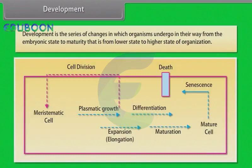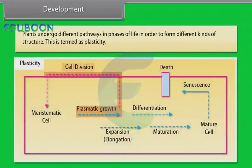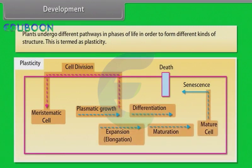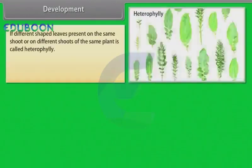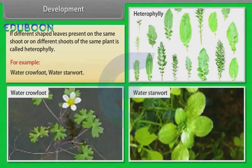Development is the series of changes in which organisms undergo in their way from the embryonic state to maturity — that is, from a lower state to a higher state of organization. Plants undergo different pathways and phases of life in order to form different kinds of structure; this is termed as plasticity. If different shaped leaves are present on the same shoot or on different shoots of the same plant, it is called heterophylly. For example, water crowfoot and water starwort.